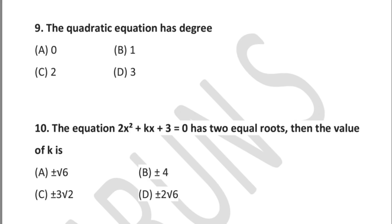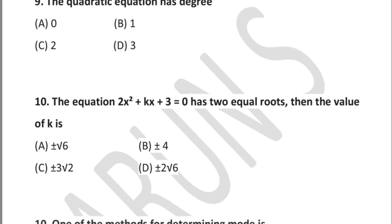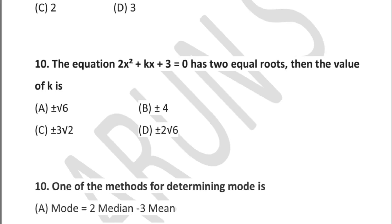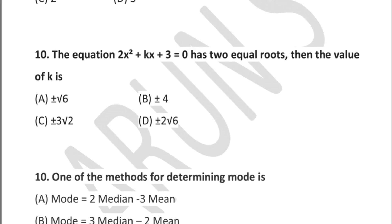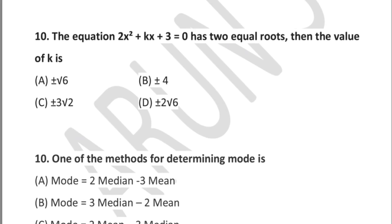Question 10: the equation 2x² + kx + 3 = 0 has equal roots. Then the value of k is — option A: ±√6, option B: ±4, option C: ±3√2, option D: ±2√6.